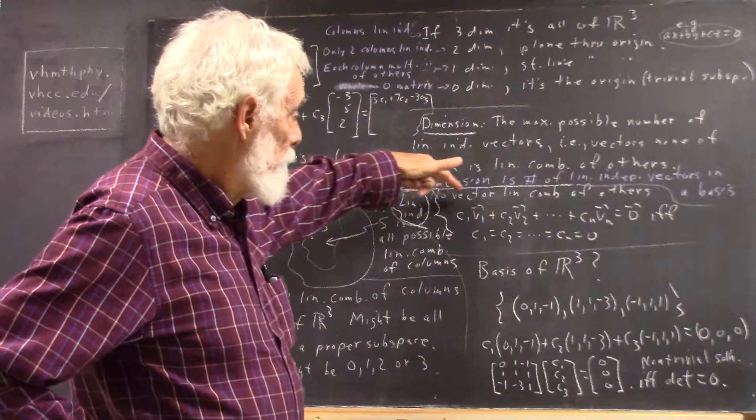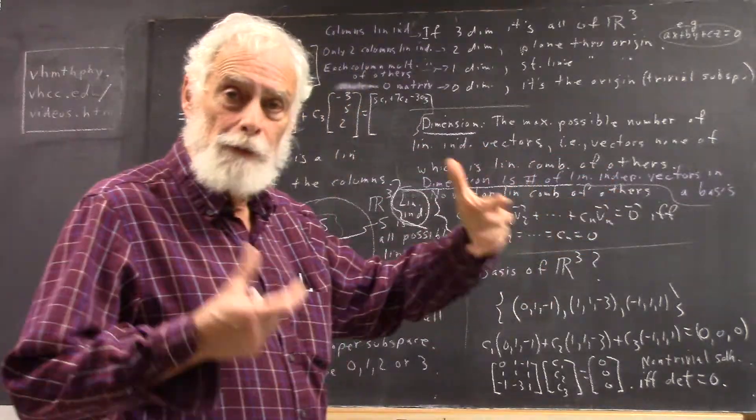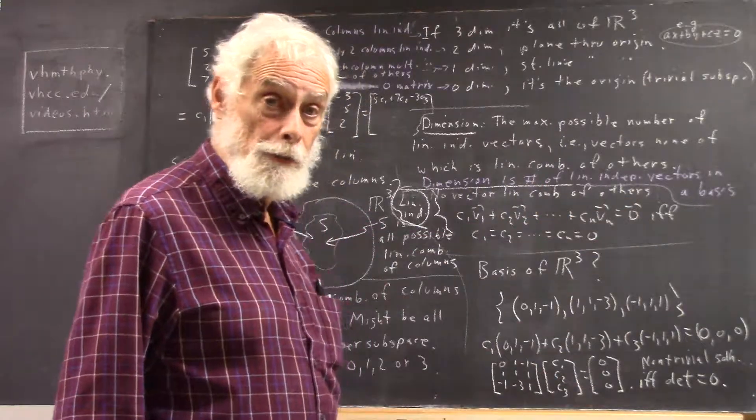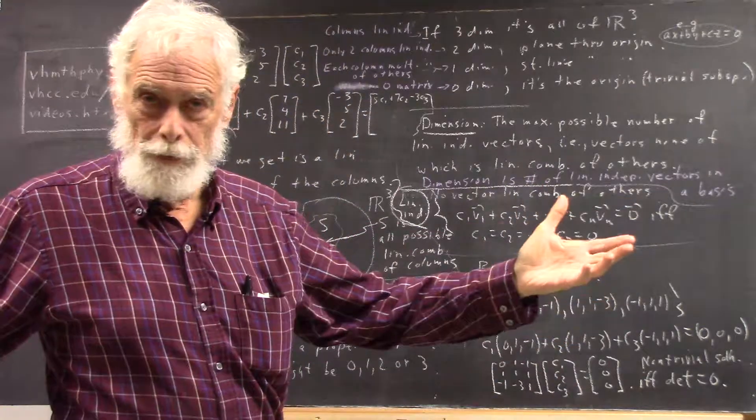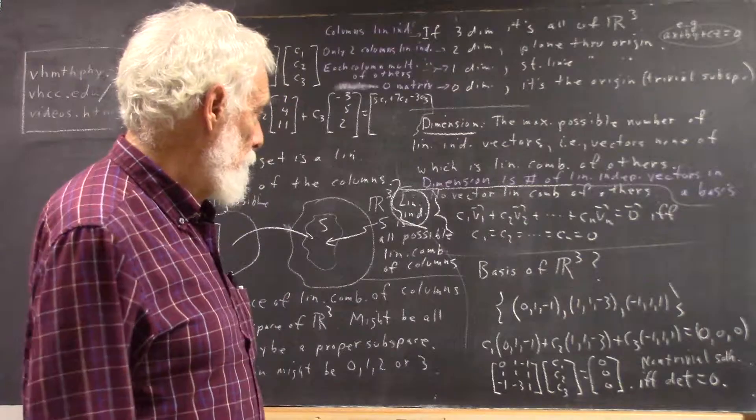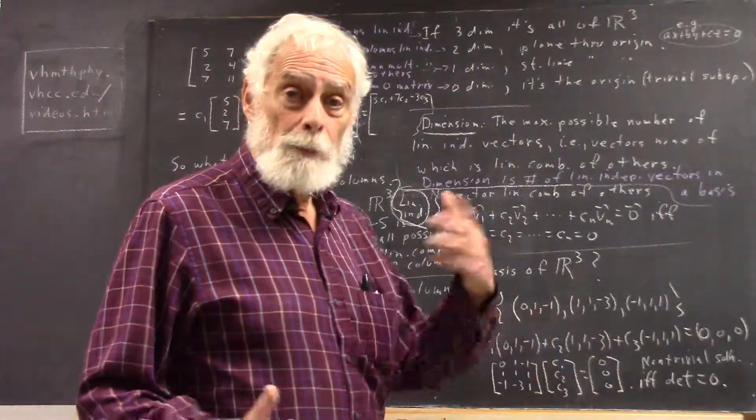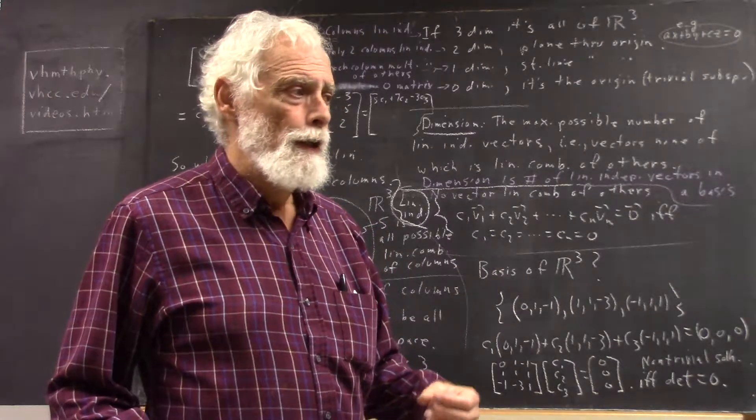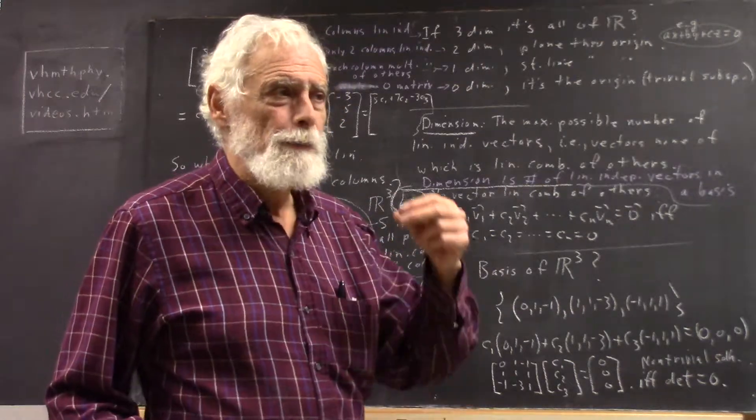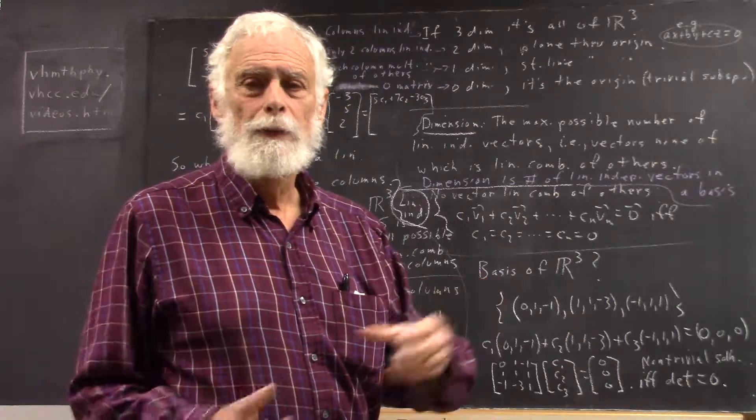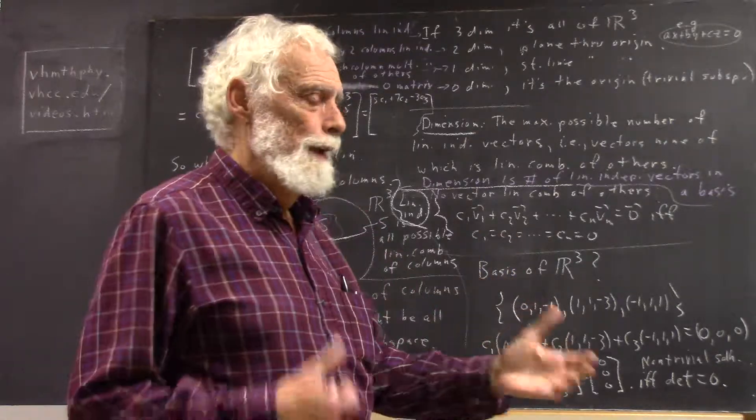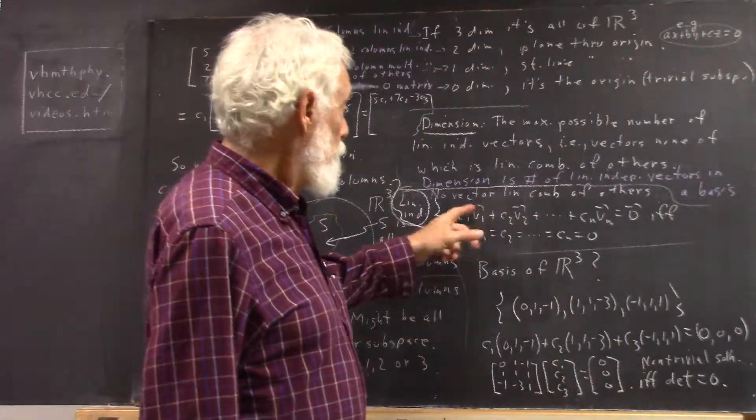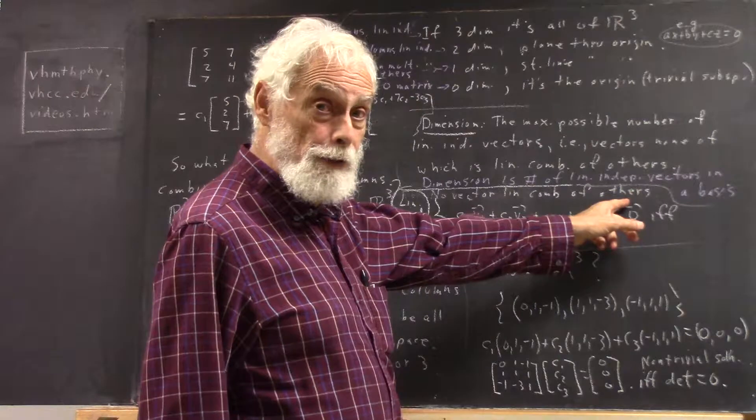So again, linear independence means a set of vectors is linearly independent if no vector in the set is a linear combination of the others. Well that's the intuitive definition. That's a good characterization. But the strict mathematical characterization that translates directly into matrix equations and matrices that you can reduce and invert and all kinds of stuff is this. And it's totally equivalent.